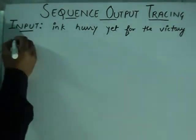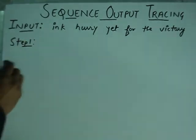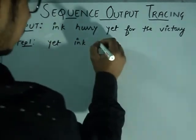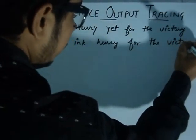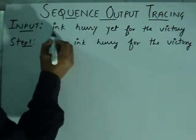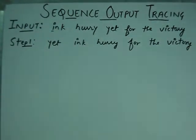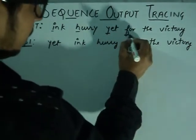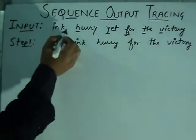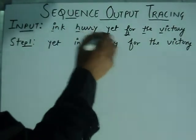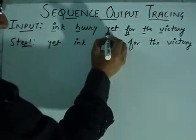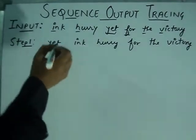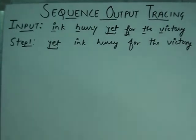What are the steps? Step one: our input is 'yet ink hurry for the victory.' We have to check various patterns and analyze what is going on. We can check the first alphabet, or check the number of alphabets in each word and place accordingly. In this case, 'yet' comes from the last place to the first place — meaning the alphabet Y is in the last alphabetical order and is going to be placed at the first position.